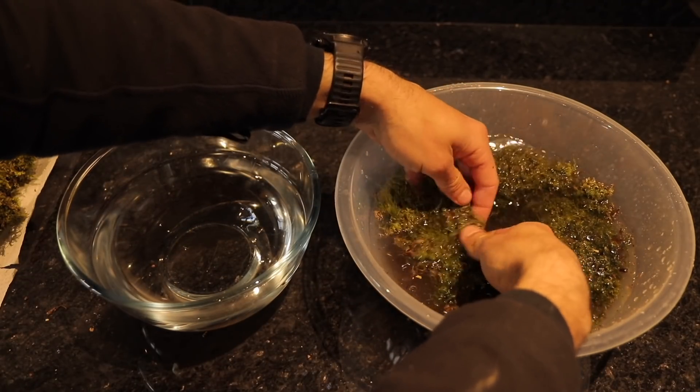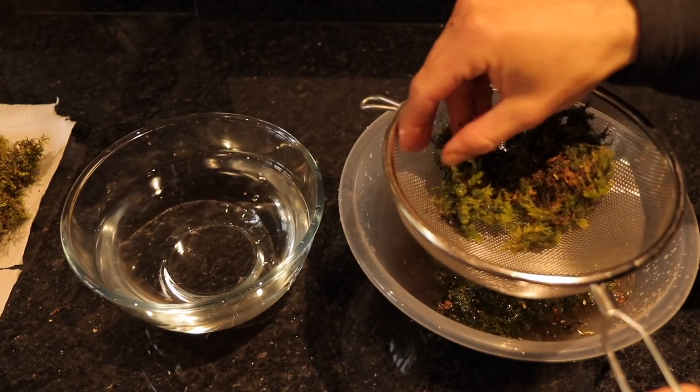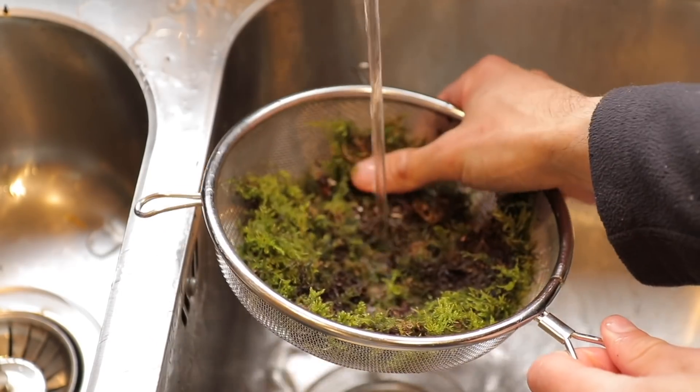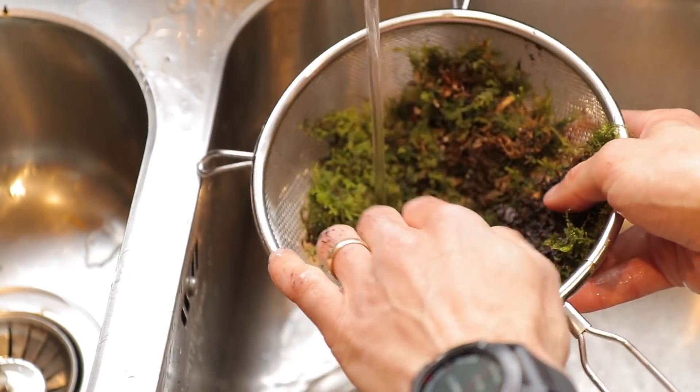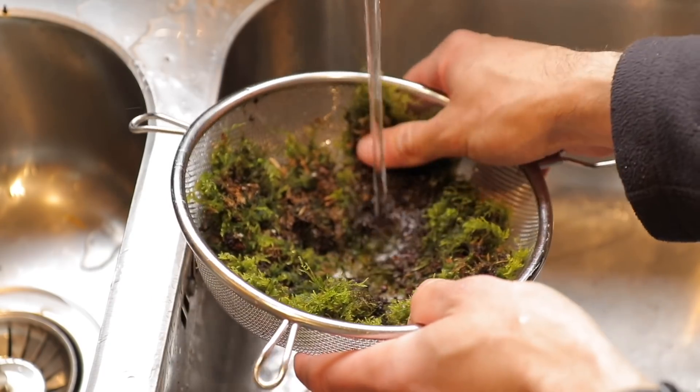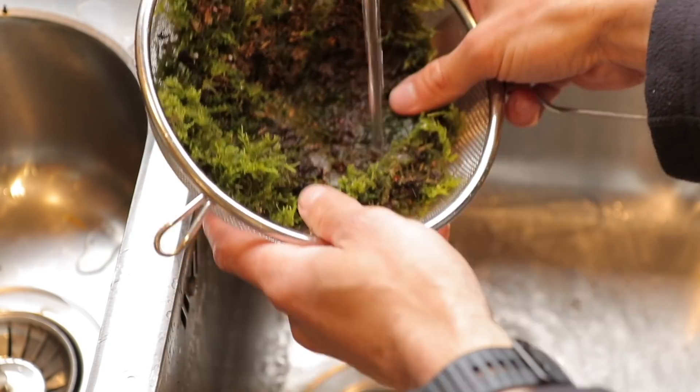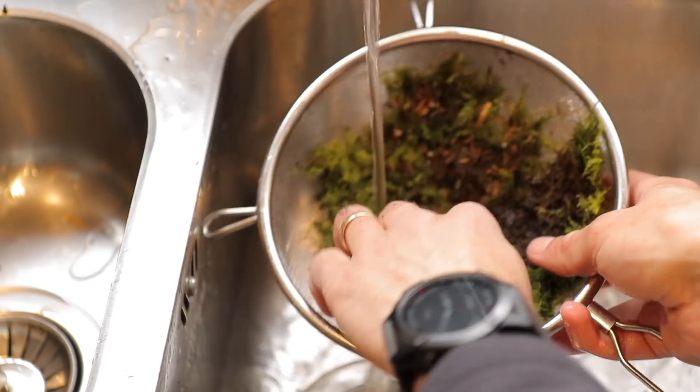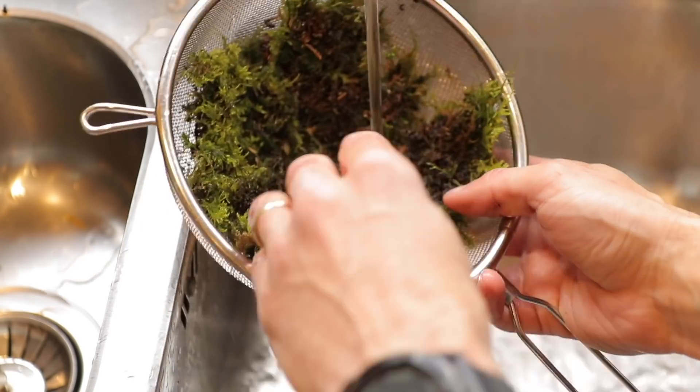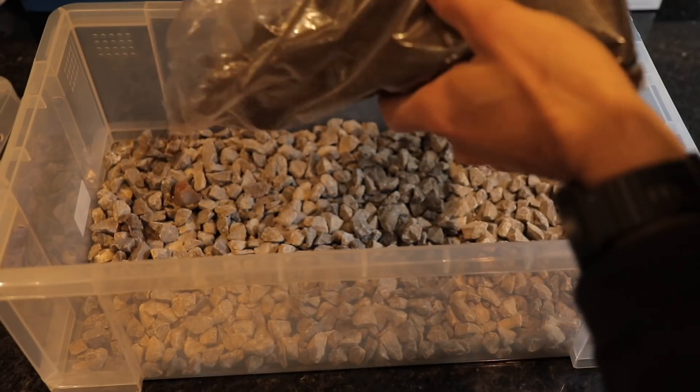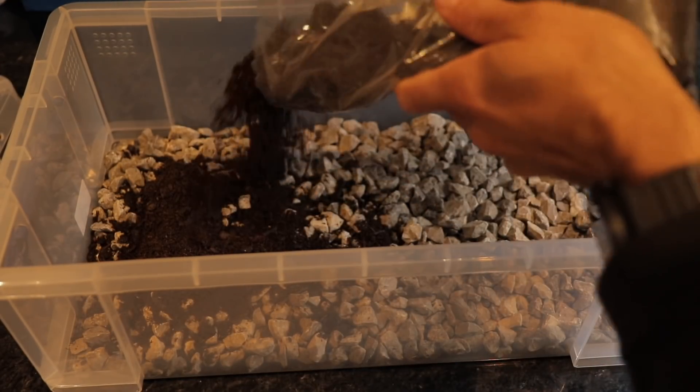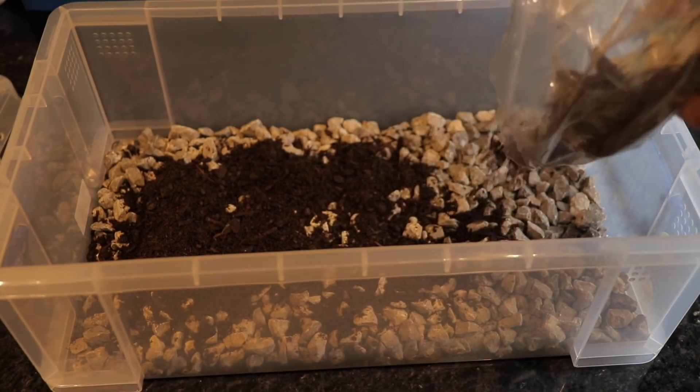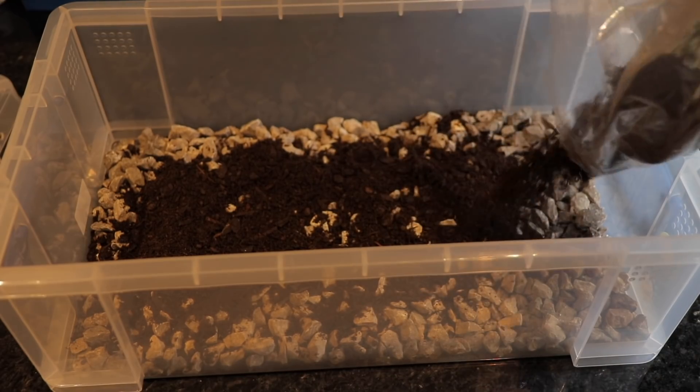Once the moss is soaked, I put it in a sieve and run this under a tap to remove any excess mud and small sticks. Although the moss grows perfectly fine in the wild with dirt and twigs, it is not sealed inside a container. It has air flow. Whereas in the terrarium, it will be sealed in, and so the moisture will also build up inside. This could cause mould to build up on the decaying pieces of wooden twigs. And so I wanted to remove as much of this as possible.